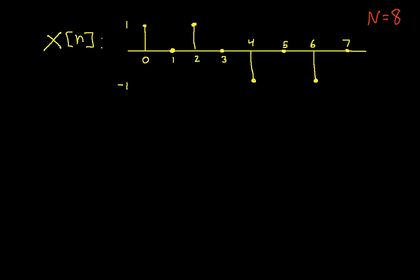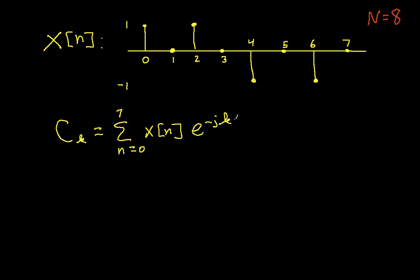The formula for the discrete-time Fourier series coefficients, C sub k, is the summation over one period of x — n going from 0 to 7 — of x[n] times e to the minus j k n 2π over N, with a 1 over N out front. In our example, N is 8, and I'll keep it in the form 2π over 8 to remind us that N is 8, then do some simplification at the end.